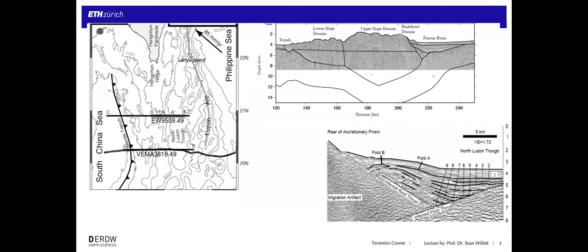Looking at another example in more detail — this is the Philippines, the Luzon margin — the Manila Trench where the South China Sea is subducting underneath Luzon. Cross sections across the margin show similar morphology to what we saw in Indonesia: a trench, an accretionary complex, a structural and topographic high, and then behind this, a forearc basin.